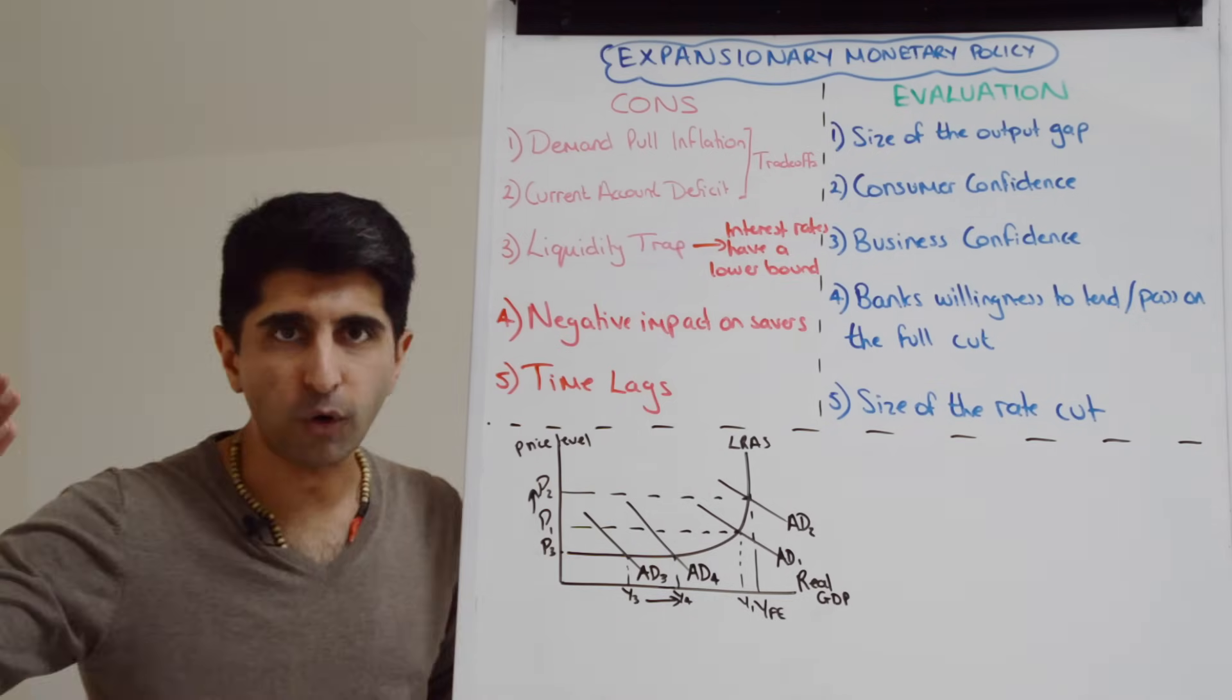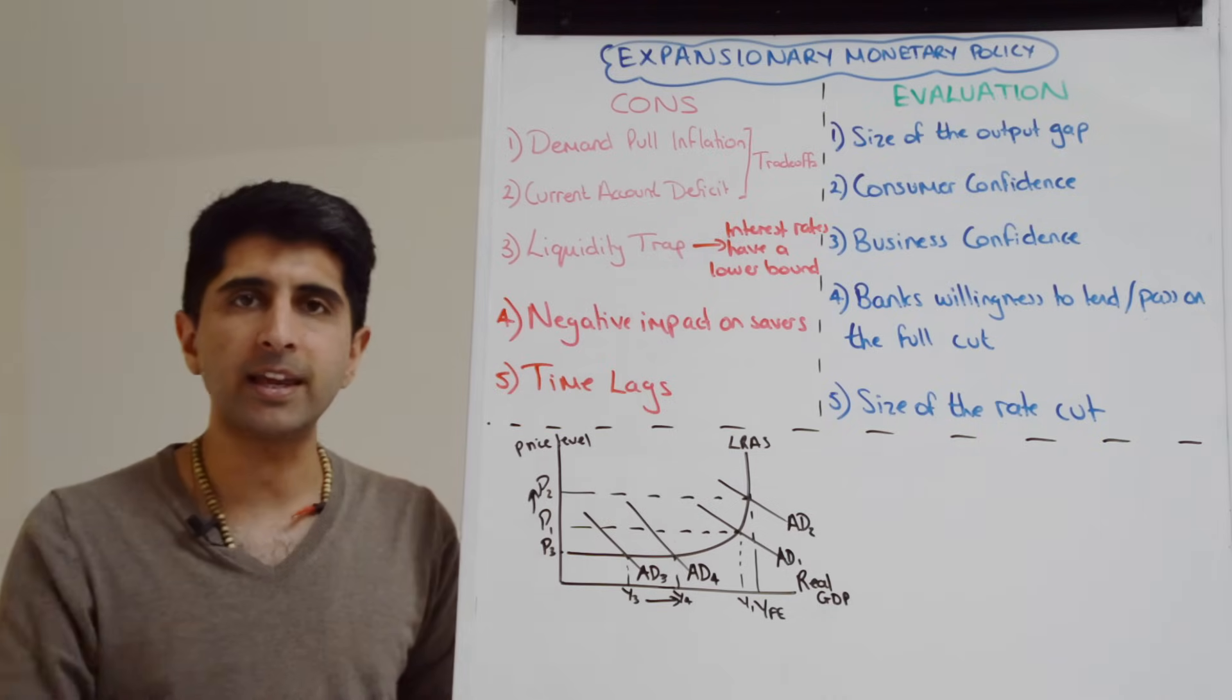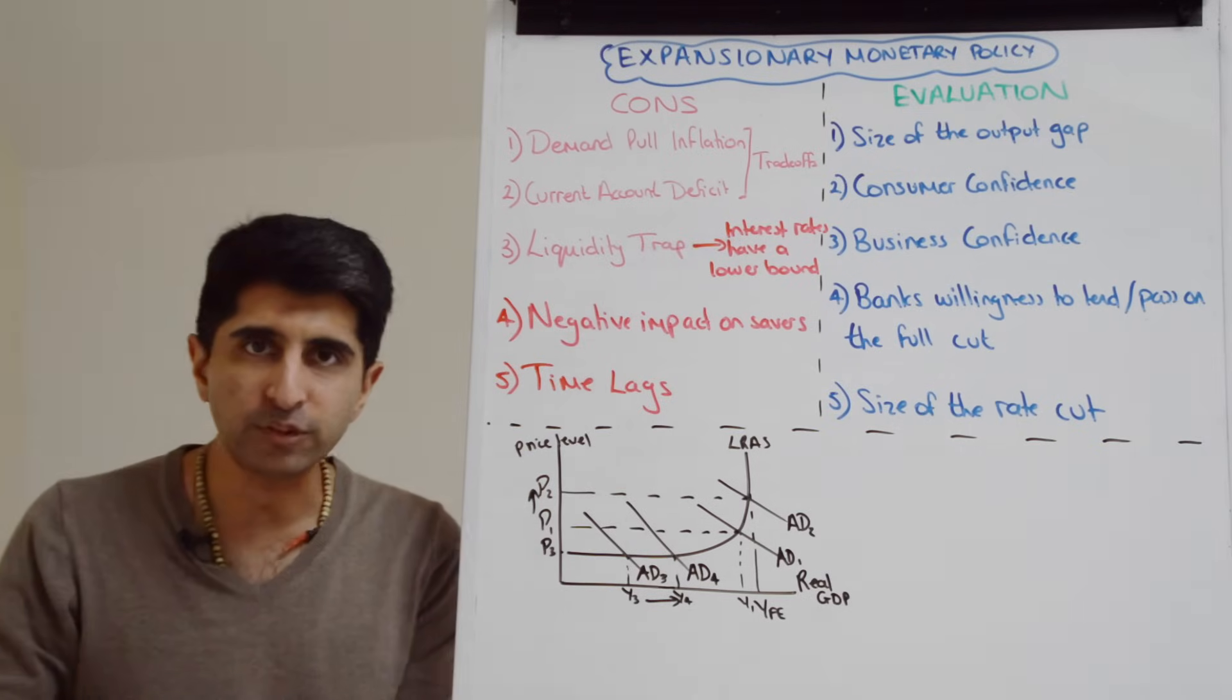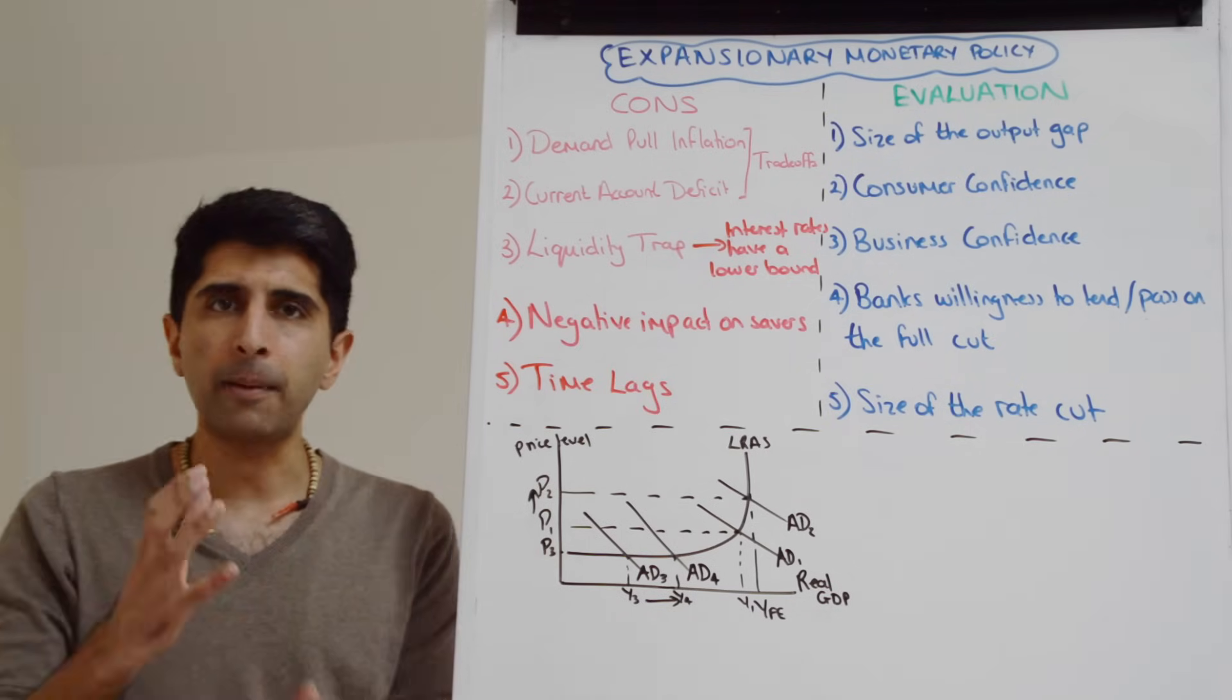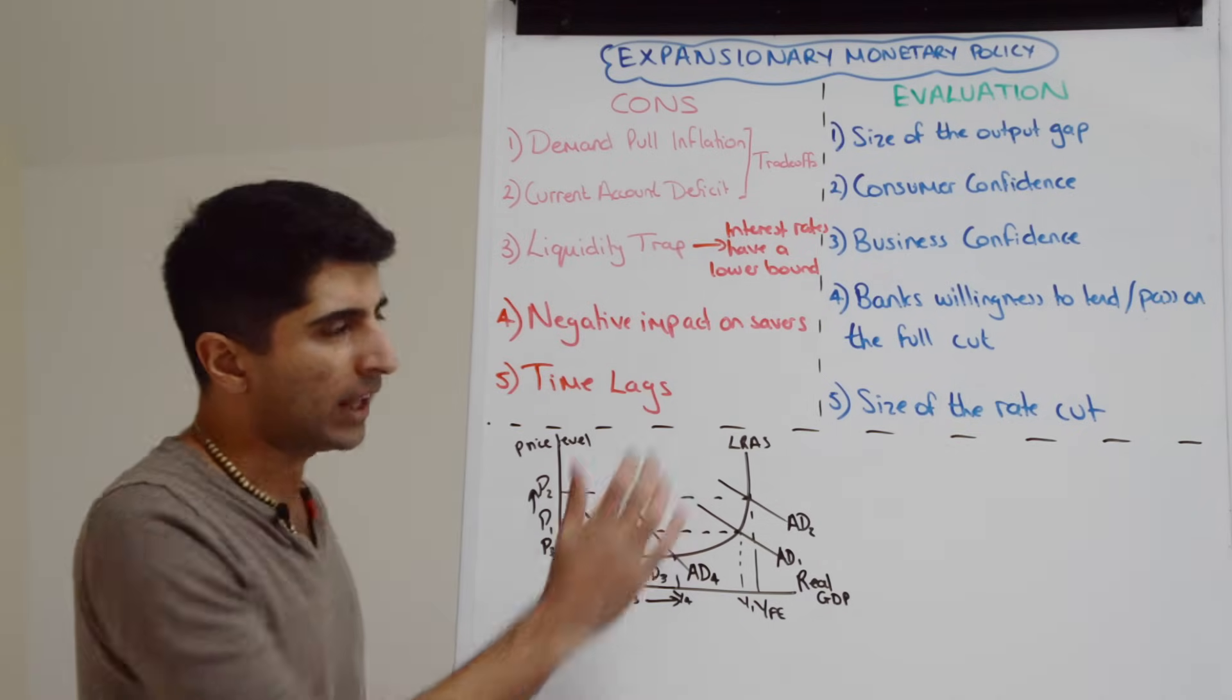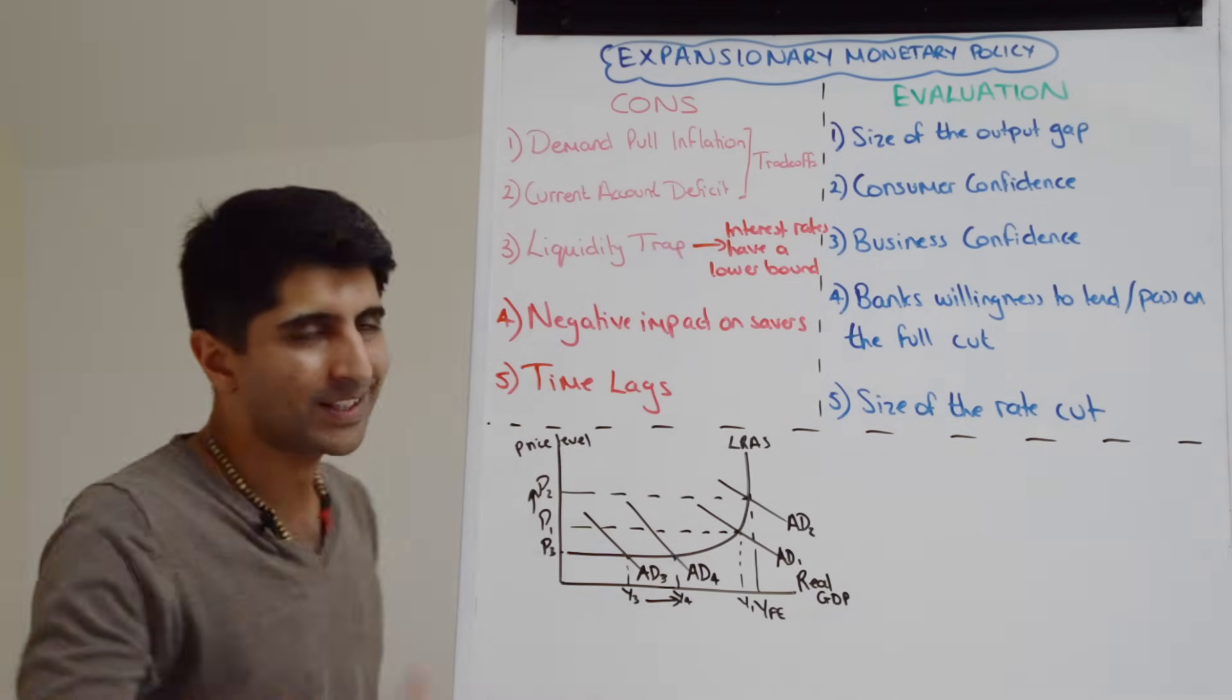And also, expansionary monetary policy comes with time lags. We learned about the transmission mechanism of monetary policy. It takes a long time for an interest rate cut to fully feed through the different channels of the transmission mechanism and then to boost aggregate demand fully. In fact, in the UK, the Bank of England say that an interest rate cut takes about 18 months to two years to fully feed through into the economy and have the full impact on aggregate demand. So that's something to bear in mind. And therefore if the economy needs a short run boost, we're not necessarily going to get it to the level we would like because of these time lags.